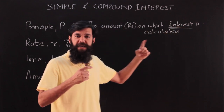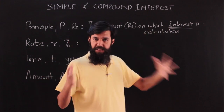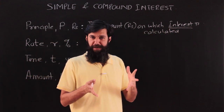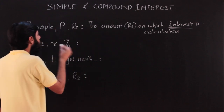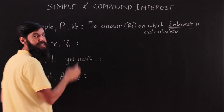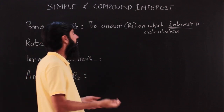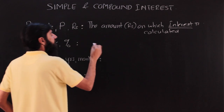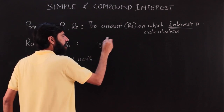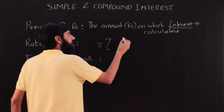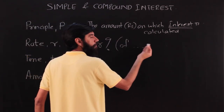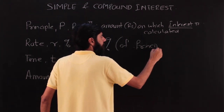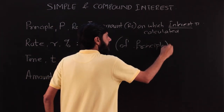We have to pay a charge for using the money — that charge is called interest. The interest is going to be calculated on some money — specifically the principal money. There is a rate that is predetermined: at what rate are we going to have an interest? This rate is a percentage — a percentage of the principal.